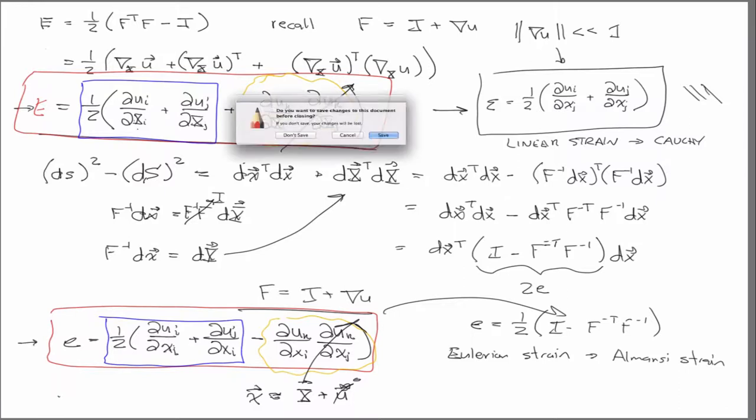But so also, just really quickly, if you remember when we defined 1D strain, we talked about the Seth Hill strain. It's sort of this generalized strain measure. And we have one of those, it's generalized to three dimensions as well.